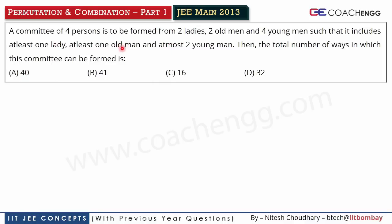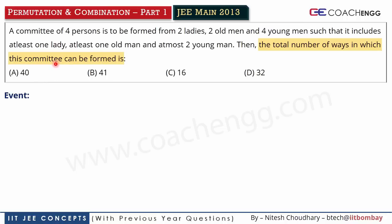First of all, we start with permutation and combination questions. We identify what we have to do — we identify the event. The event defines what number of ways we need to identify. So we need to identify the number of ways to form a committee. That committee has to be of four persons — so basically our event is: we have to find the number of ways in which we can make a committee of four persons.